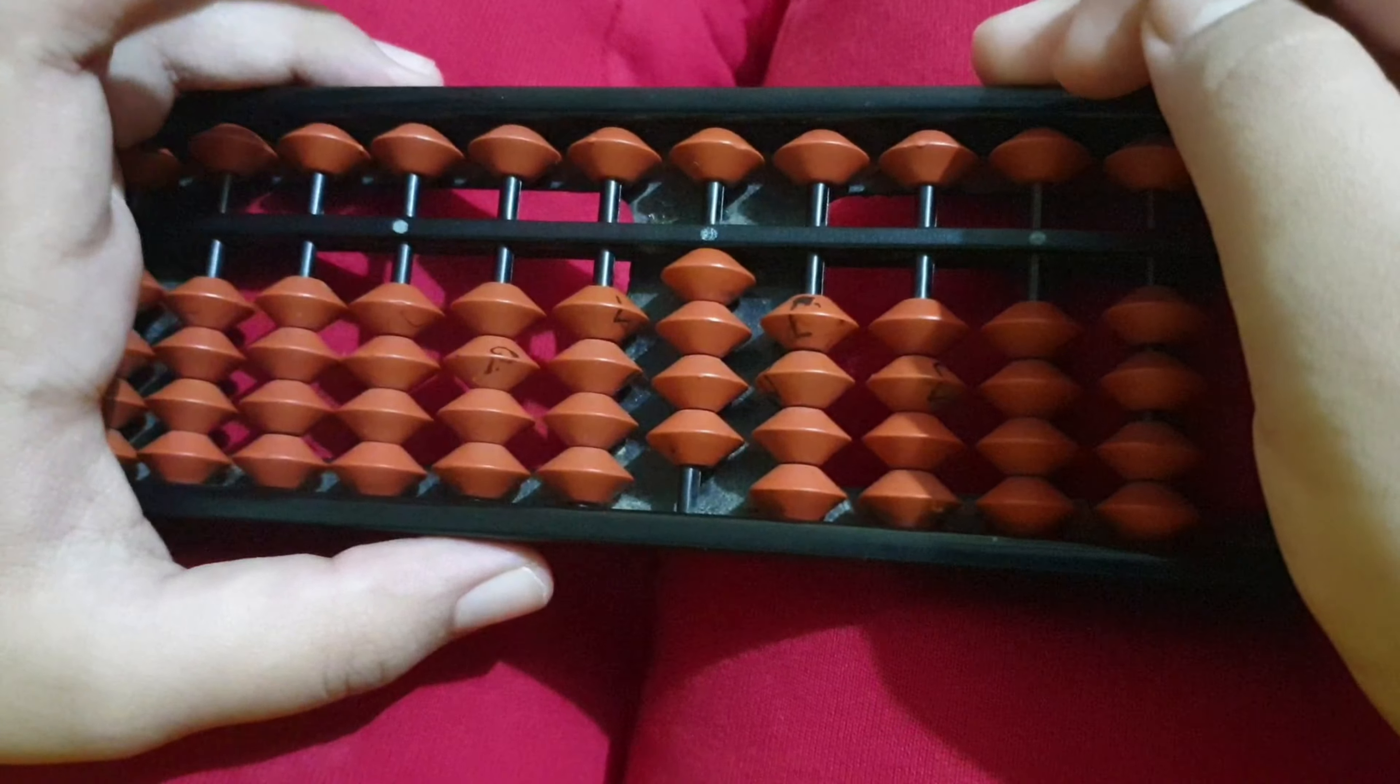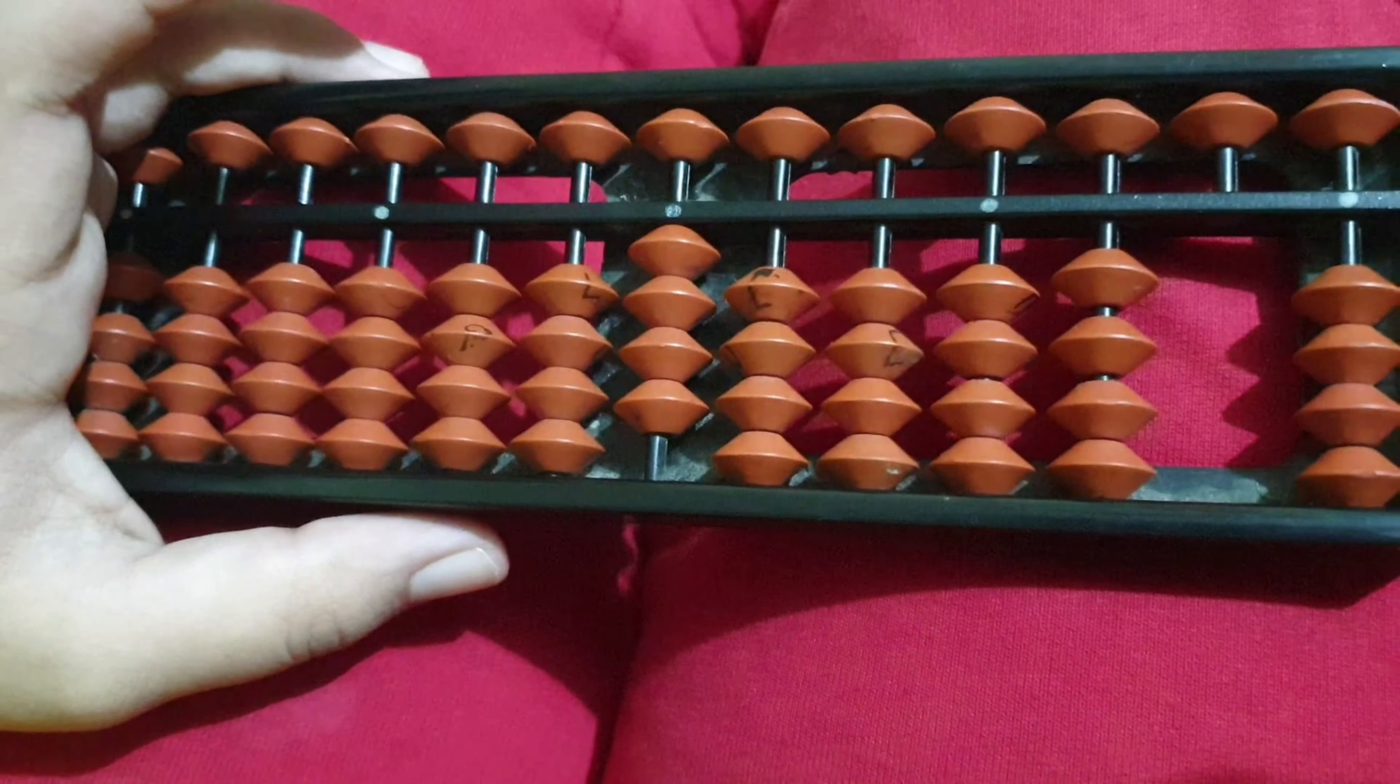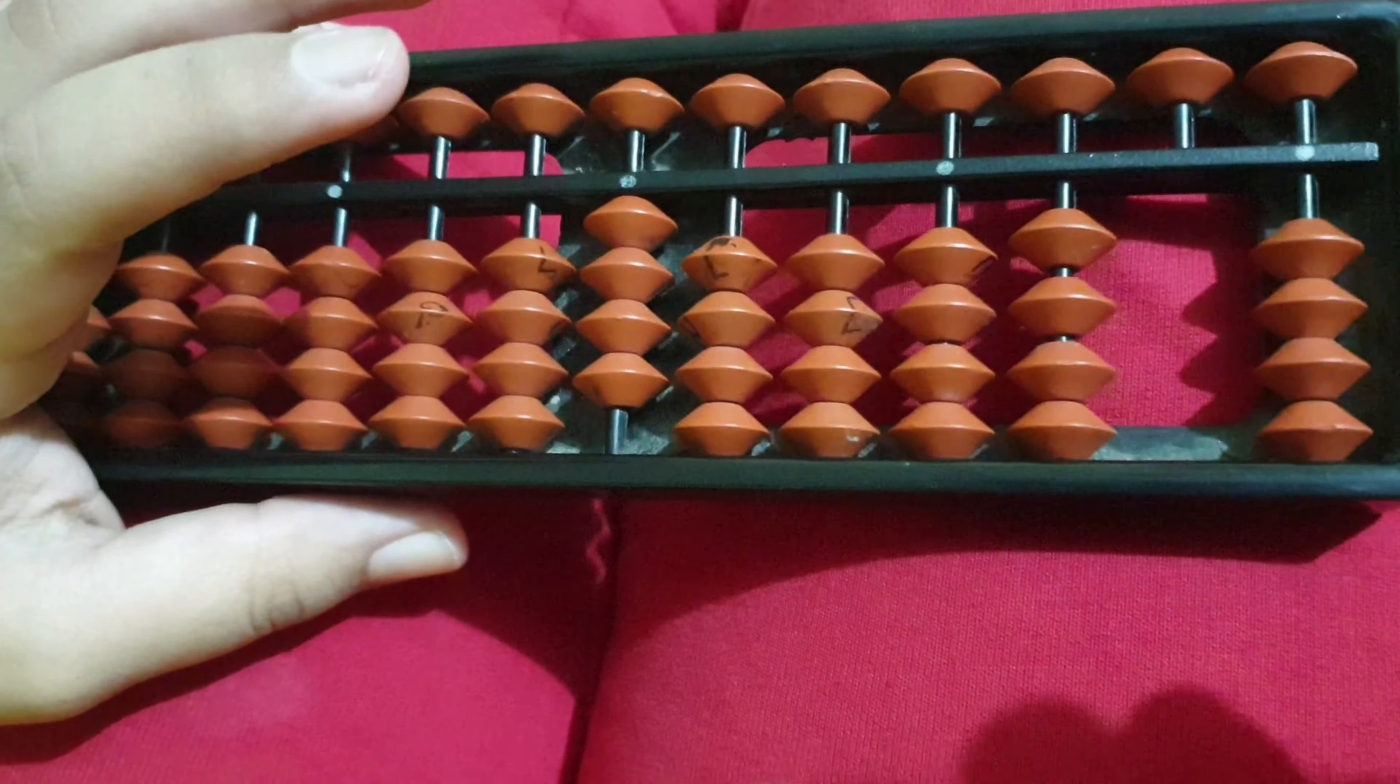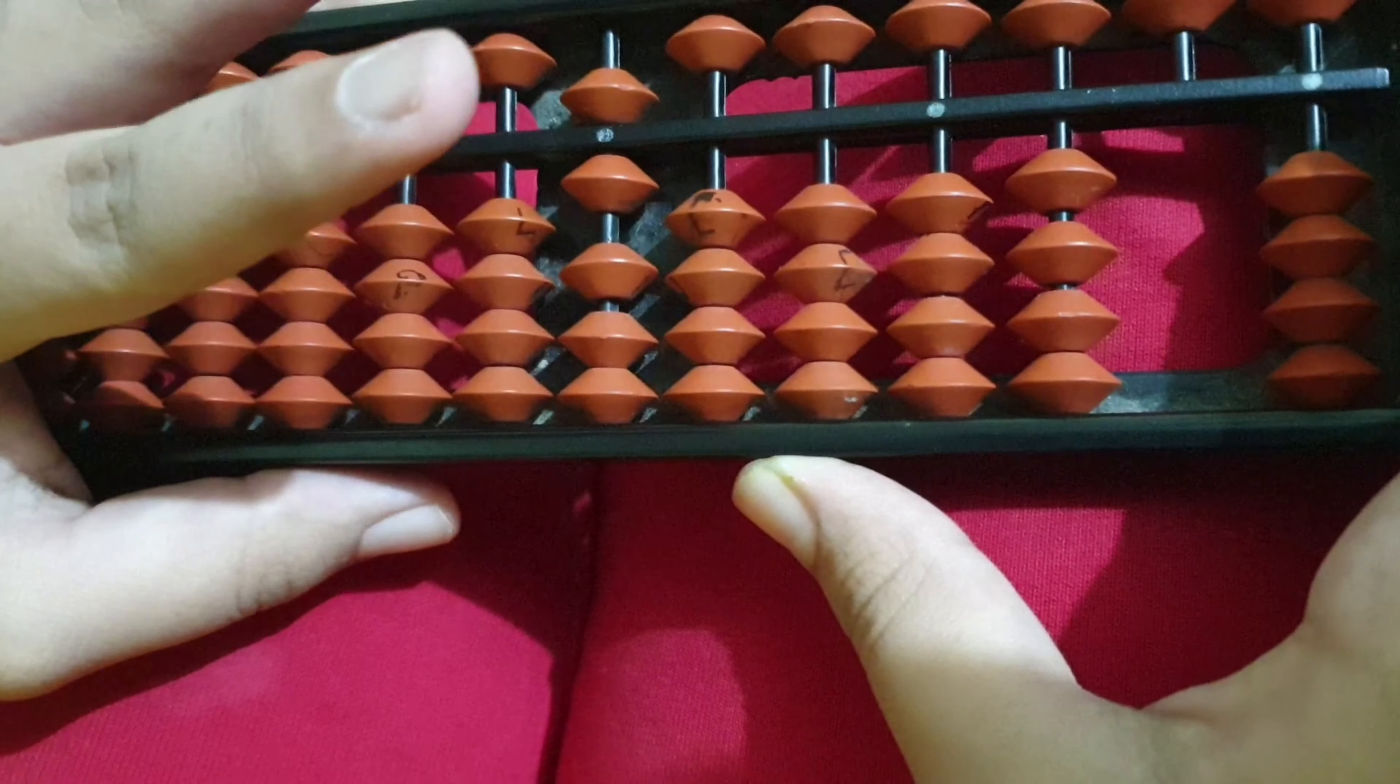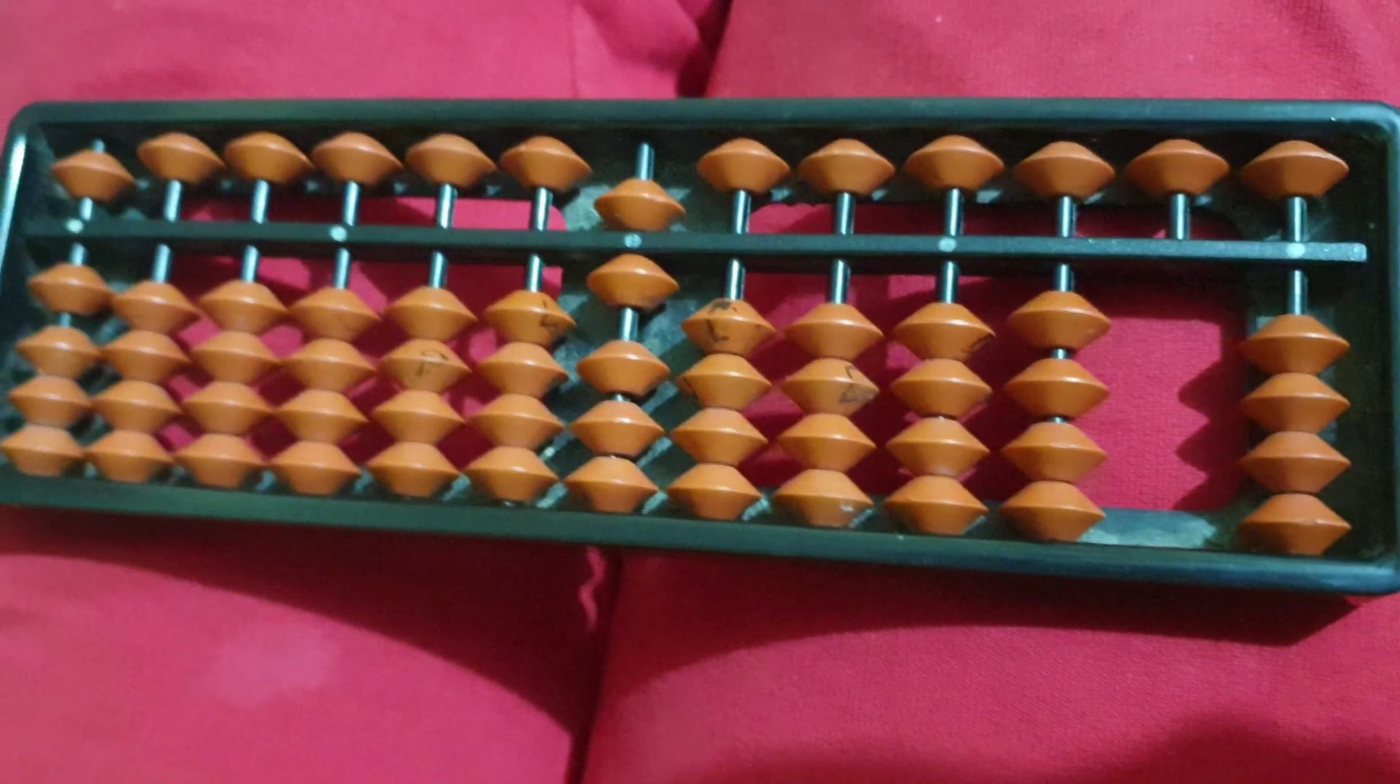Now what if I want to add 2 more to it? How could I add because there are no lower beads left here? So there's a simple thing. What we need to do is do like this. But hey wait, why did we do this?